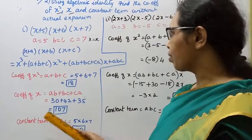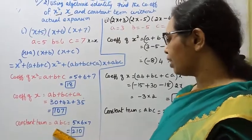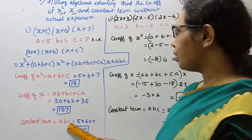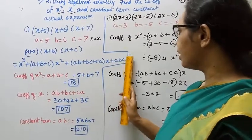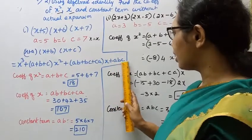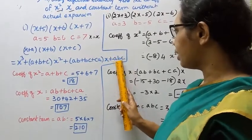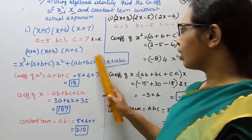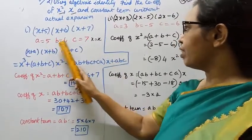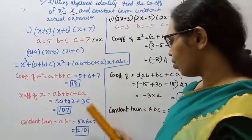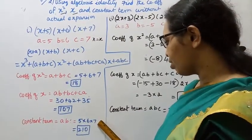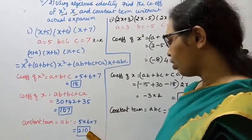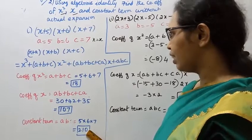Constant term is abc. So a times b times c equals 5 times 6 times 7. 5 times 6 is 30, and 30 times 7 is 210. The constant term is 210.